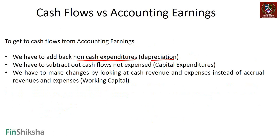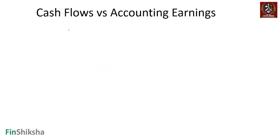To derive cash flow from accounting earnings, you must add back non-cash expenditures such as depreciation or amortization that have already been deducted. You must subtract cash flows not expensed — that is, capital expenditures, which are not treated as expenses. You must also make changes by looking at cash revenues and expenses instead of accrued revenues and expenses, and that includes all changes arising from working capital.